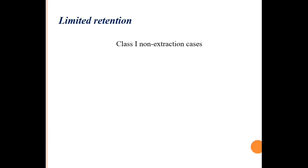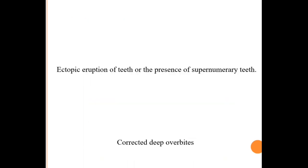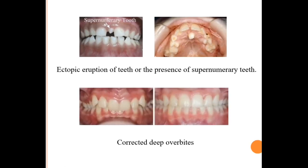The second category is limited retention required. Cases in this category include Class I non-extraction cases, Class I or Class II extraction cases, ectopic eruption of teeth or presence of supernumerary teeth, and corrected deep overbite cases. In these cases, retention planning is required but retention is not needed for a longer period of time.